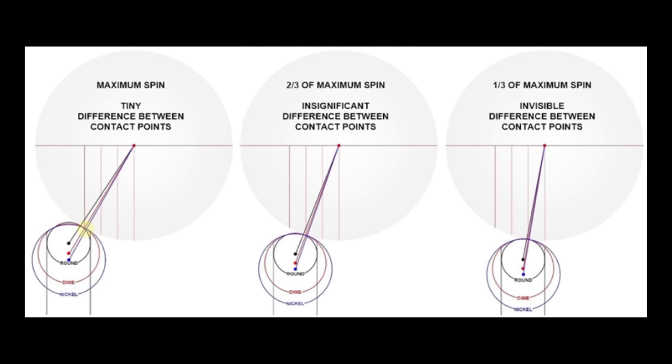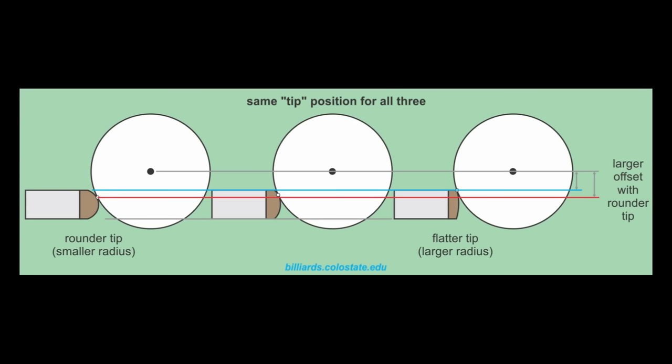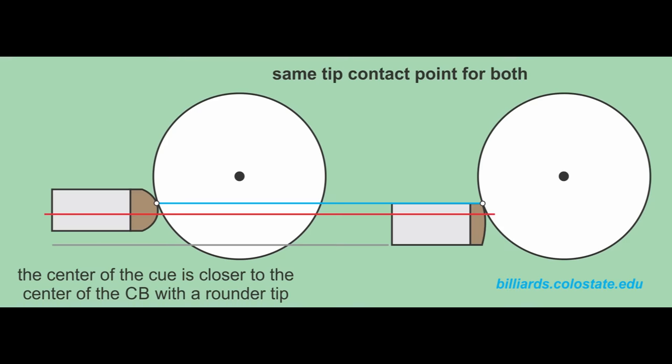This makes it clear that there really isn't any important difference between a nickel and dime tip shape, despite what many people might think. This diagram compares tips of different roundness on shafts of the same size. For a given tip offset from center, the rounder tip obviously creates more spin than the flatter tip for this cue position, but the differences in tip roundness are very large in this comparison.